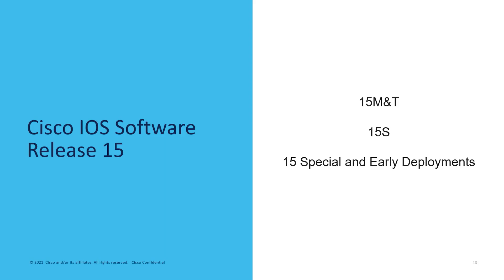I'll also do a brief overview of different IOS version 15 releases. Starting off is IOS version 15 M&T. This Cisco IOS software provides functionality and hardware support for enterprise access and commercial networks and incorporates features previously introduced in versions 12.4T and 12.4T trains. M stands for extended maintenance release and T stands for standard maintenance release. Next is 15S, which was introduced to provide functionality for Cisco's 7200, 7300, and 7600 series routers. Cisco IOS 15 also has a section for special and early developments, but these trains were intended to be short-lived and got integrated into the 15 M&T train.